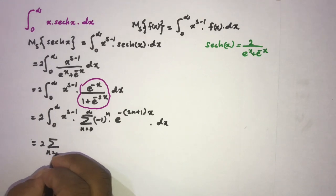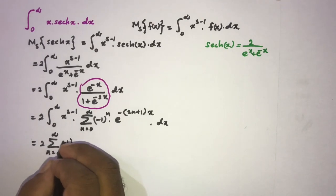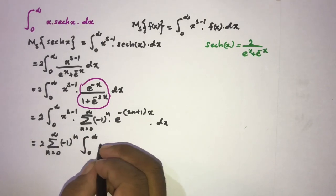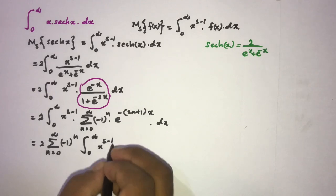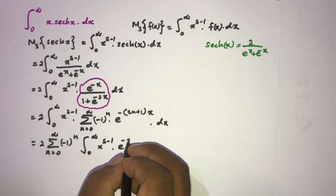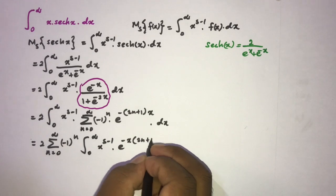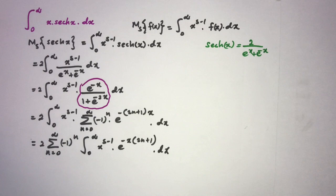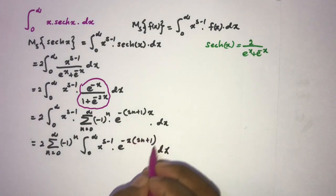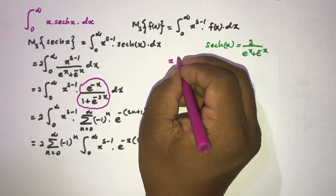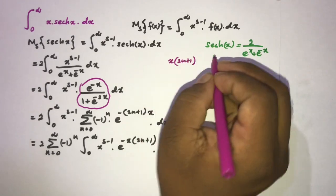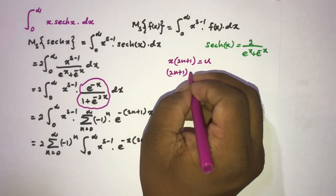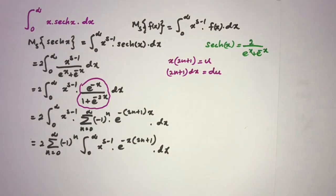Then we can switch the integral sign and sigma notation: 2 times sum_{n=0}^{∞} (-1)^n times the integral from 0 to infinity of x^{s-1} e^{-(2n+1)x} dx. Now I take the substitution u = (2n+1)x, so du = (2n+1) dx.